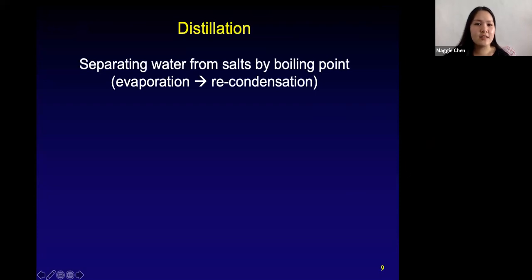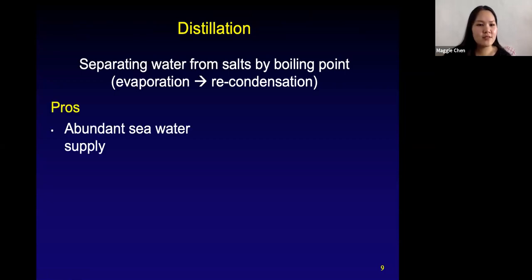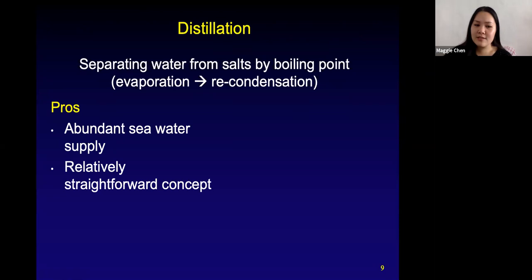Distillation is the process of separating water from salts by boiling point. After you boil salty water, pure water evaporates and recondenses in a form we can use. Some pros to distillation: if you're near a coast, there's a lot of seawater available to use. And it's a relatively straightforward concept — we're basically just taking pure water from seawater.